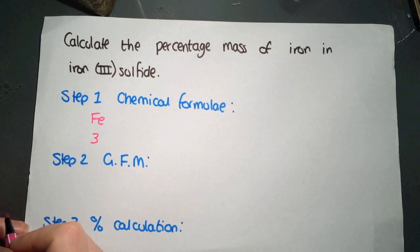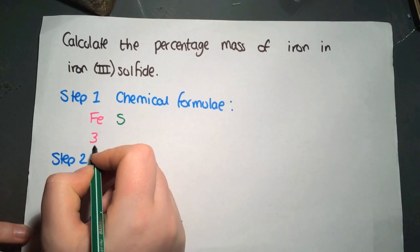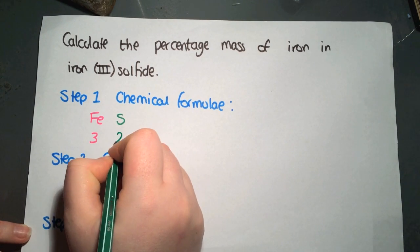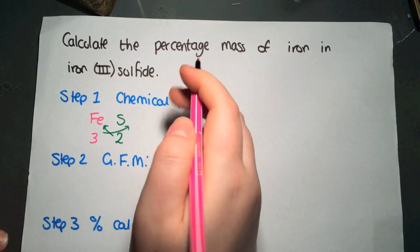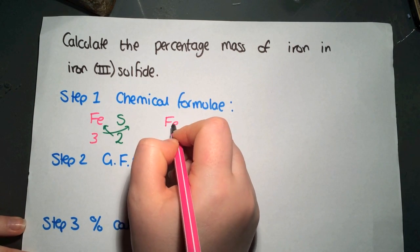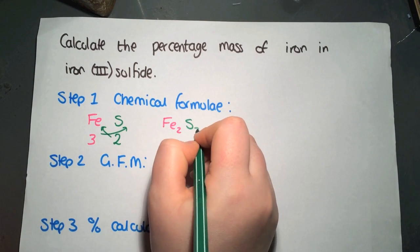I'm going to use the crossover method here, so I've written 3 underneath. And then the symbol for sulfur is S. It's in group 6, so that's a valency of 2. I'm crossing over the numbers, so that we'll have Fe2, S3.